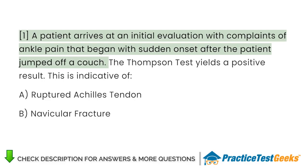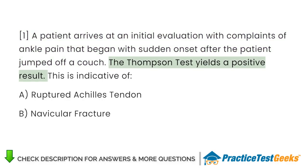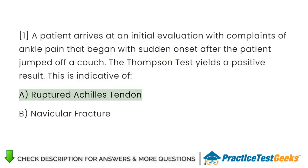A patient arrives at an initial evaluation with complaints of ankle pain that began with sudden onset after the patient jumped off a couch. The Thompson test yields a positive result. This is indicative of: A. Ruptured Achilles tendon. B. Navicular fracture.